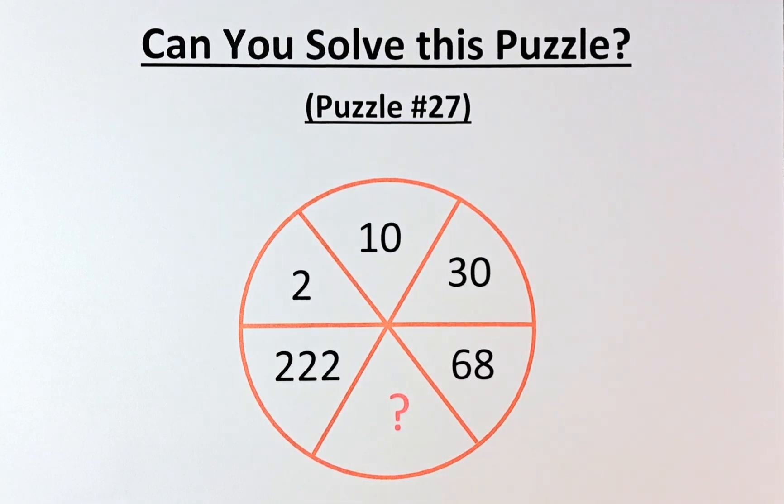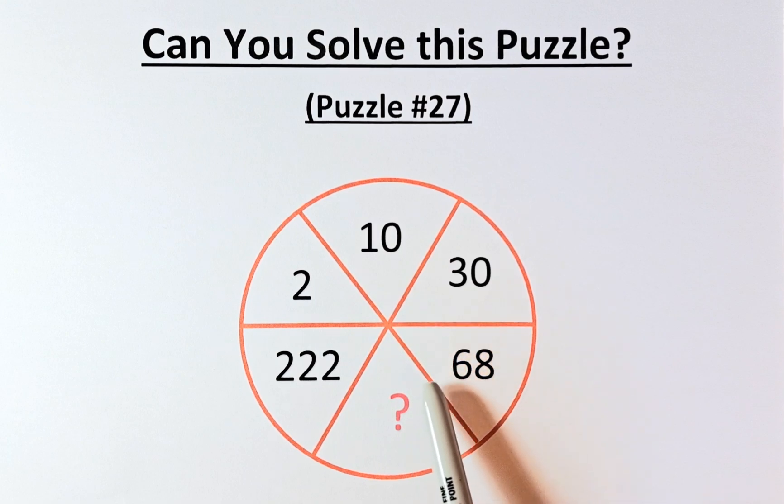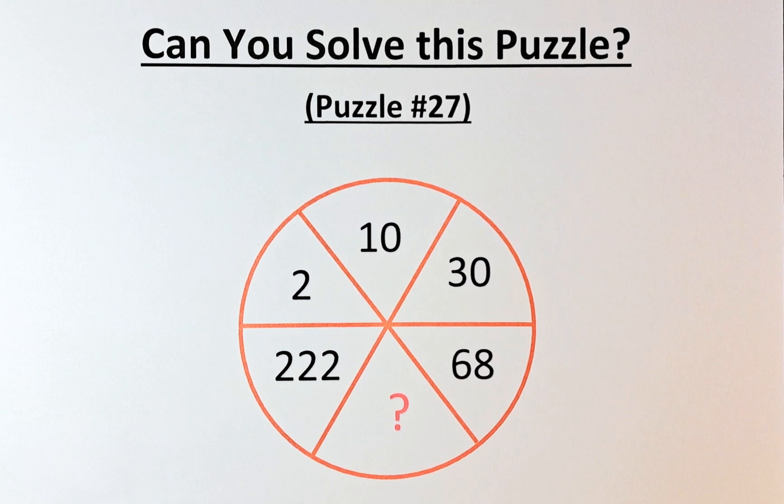Welcome back to the solution of puzzle number 27. Can you solve the missing number in this puzzle? The puzzle starts at 2 followed by 10, 30, 68, question mark and 222.